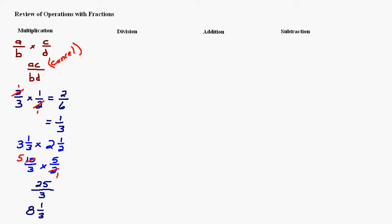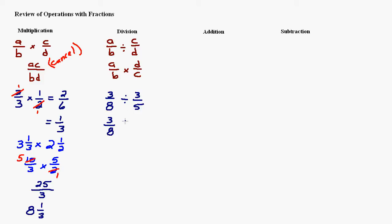For division, the rule is: A over B divided by C over D equals A over B times D over C. You keep the first fraction the same, change the divide to a multiply, and take the reciprocal of the second fraction. For example, 3 eighths divided by 3 fifths — keep 3 eighths, flip to multiply by 5 thirds. Now that it's a multiplication problem, I can cancel the 3 and the 3, leaving 5 eighths.